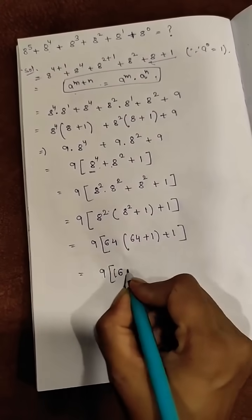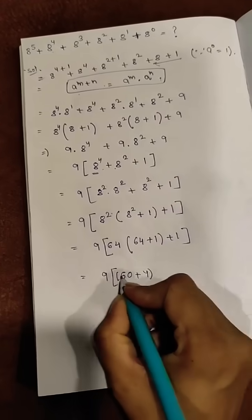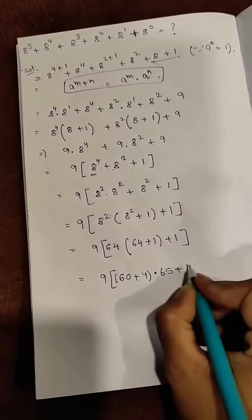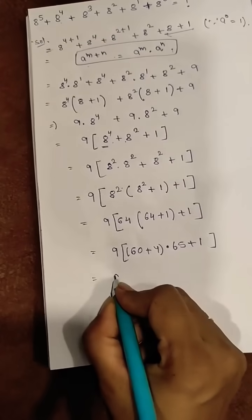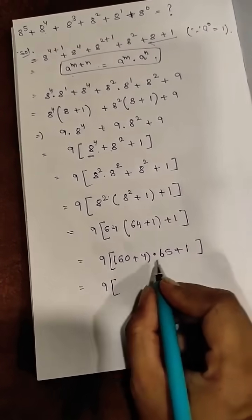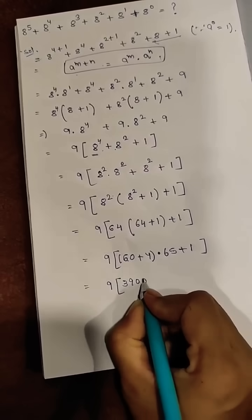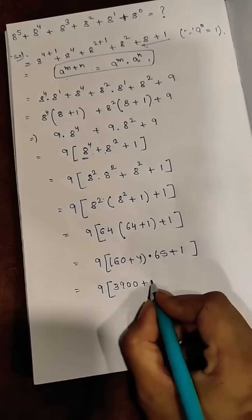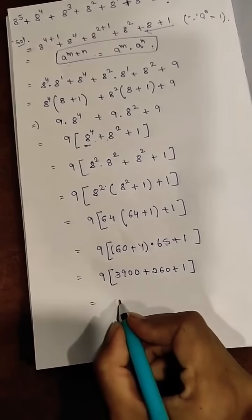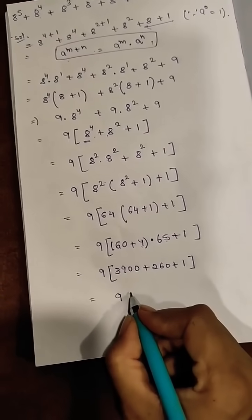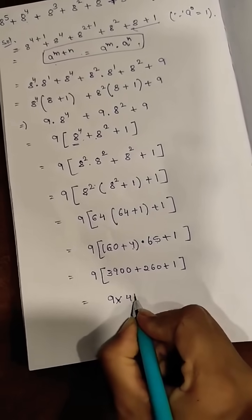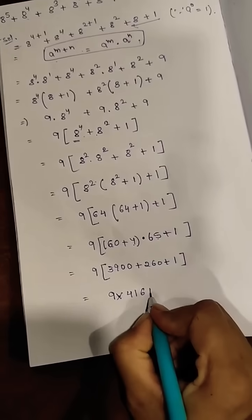64 can be written as 60 plus 4, into 65 plus 1. Now 60 into 65 is 3900, and 4 into 65 is 260, plus 1. The addition gives you 4161.